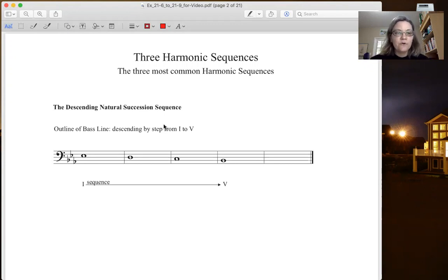You start by putting whole notes on the downbeat in a descending four note scale. You start on the tonic, scale degree 1, you move to scale degree 7, 6, and you end on scale degree 5. So just descending by step from the tonic to the dominant.